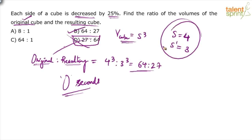Now you may ask me, how do you know that the side is 4? I don't know the side is 4, you can take any side. I can take the side as 2, in that case the resulting side will be 1.5, so 2³ is to 1.5³. That will make your life only more complicated.